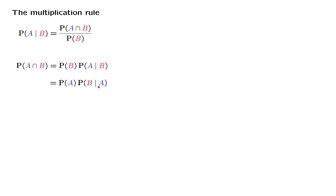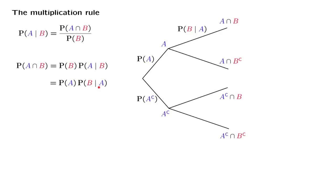We used this formula in the context of a tree diagram, and we used it to calculate the probability of a leaf of this tree by multiplying the probability of taking this branch — the probability that A occurs — times the conditional probability of taking this branch, the probability that event B also occurs, given that event A has occurred.